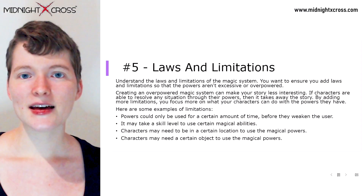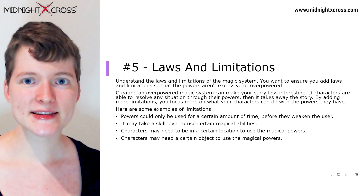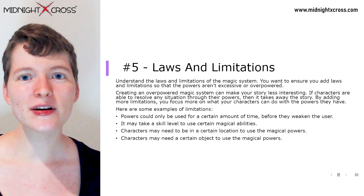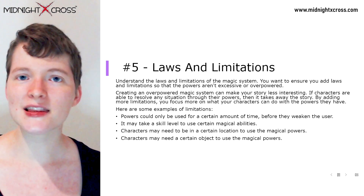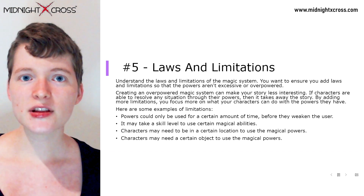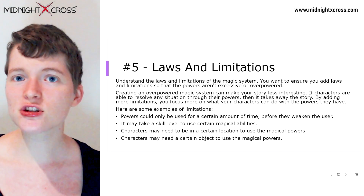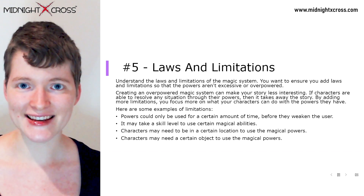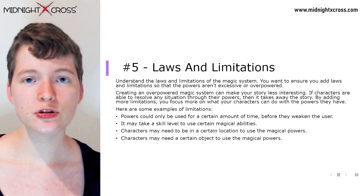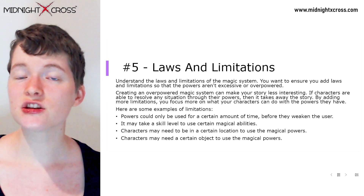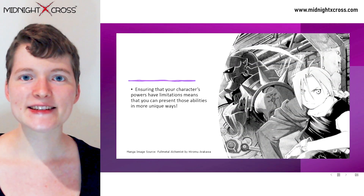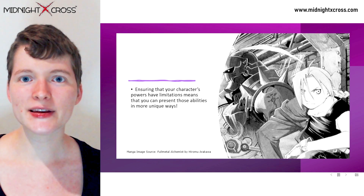Number five: laws and limitations. Understand the limitations of a magic system. For storytelling purposes, it's better to focus on your character's limitations with their magical abilities rather than making them really overpowered, because it's more interesting to see how a character resolves a situation through limited magical abilities. Some limitations you could use: powers could only be used for a certain amount of time before they weaken the character; it may take a certain skill level or technique to use the abilities; characters may need to be in a certain location; or characters may need to use a certain object like a wand. This ensures abilities can be presented in more unique ways.